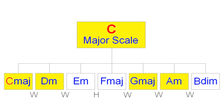So, if you heard the chords D minor, C major, A minor, G major, you'd know that the C major scale is the parent scale, and therefore all the notes contained within that scale will also be contained within the chords.